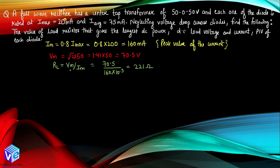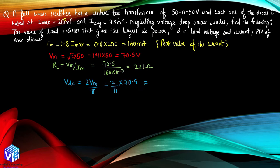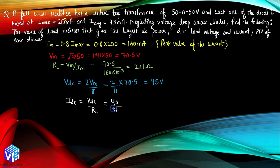Now we proceed to find Vdc. I know Vm, so Vdc equals 2Vm upon π. Putting the value of Vm as 70.5, the output equals 45 volt. For Idc, using Ohm's law: Idc equals Vdc upon R_L, which is 45 upon 221, giving 0.204 ampere.